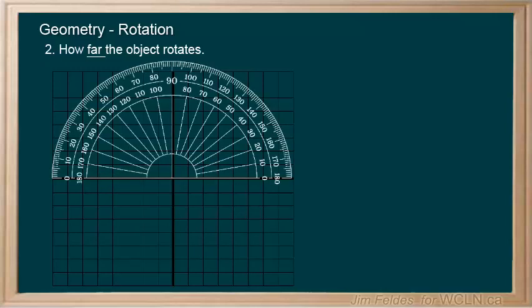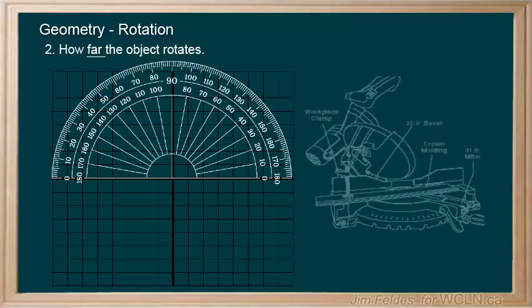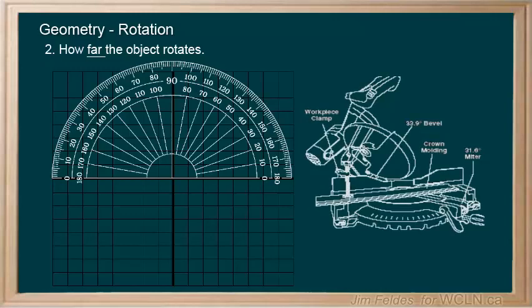These are of course the markings you would find on a protractor when you are looking for more accurate angles of rotation. Tools that cut angles also have similar markings.